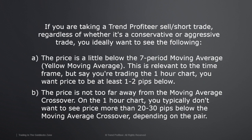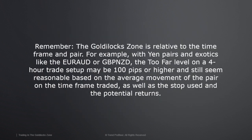If you're looking at a yen cross on a one-hour time frame, you may want to increase that Goldilocks zone to 40 or 50 pips because of how yen crosses are structured. The 40 or 50 pips is a reasonable distance on a one-hour yen cross compared to say the euro or the pound versus the US dollar. So the Goldilocks zone is relative to the time frame and pair. For yen pairs and exotics like the euro-aussie or pound-kiwi, the too-far level on a four-hour setup may be 100 pips or higher — it might be 150 pips — whereas on EUR-USD it might only be 50 pips.